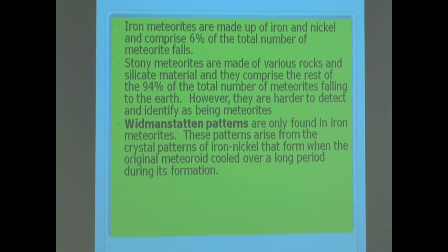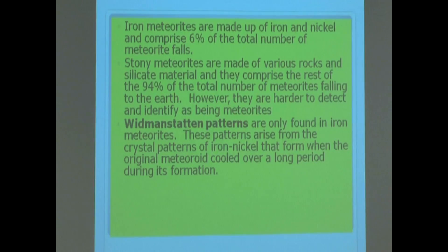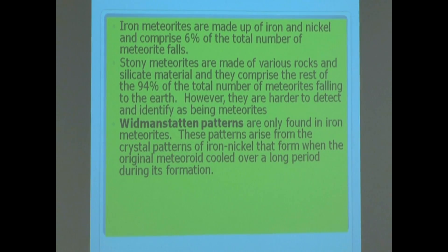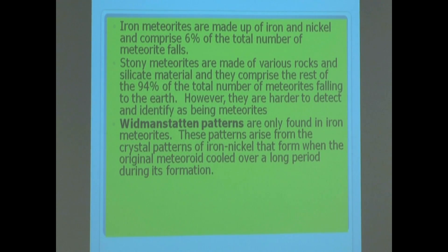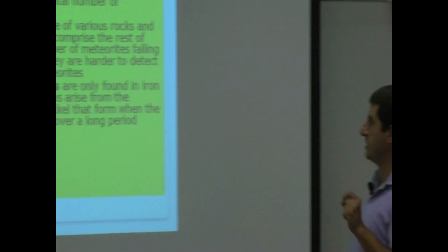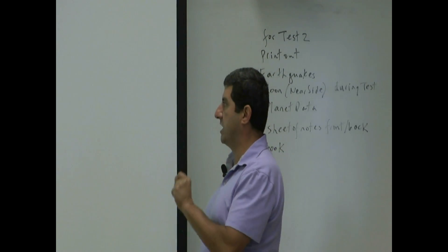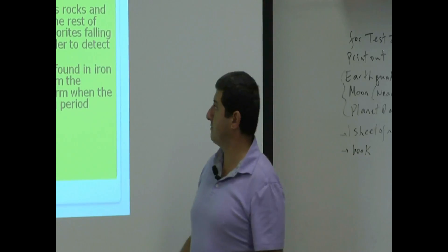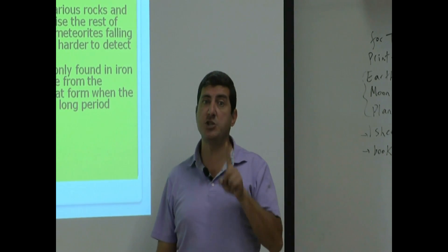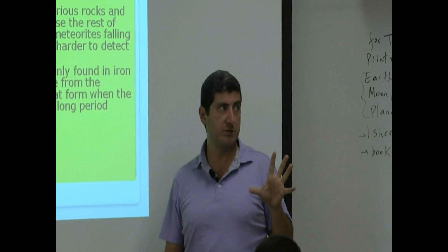This one is a hard word to say. It's a German word. Widmanstätten pattern. Widmanstätten patterns are only found in iron meteorites. These patterns arise from the crystal patterns of iron nickel that form when the original meteoroid cooled over a long period during its formation. It's basically a crystal pattern. That's one of the things that makes it easy to pick out and recognize.